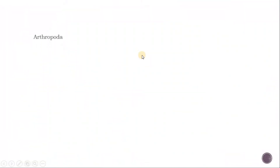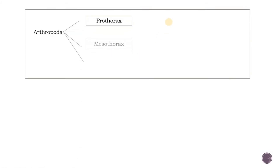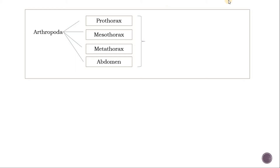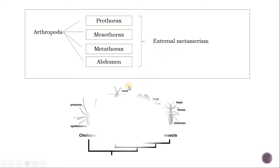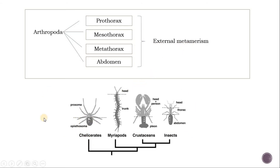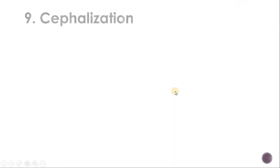In Arthropoda there is only external metamerism or external segmentation: prothorax, mesothorax, metathorax, and abdomen. In Chelicerata the prosoma body divides into two segments: prosoma and opisthosoma. Some have head and trunk; others have head, cephalon, and pallion; or head, thorax, and abdomen where head and thorax mix to make up prothorax and mesothorax. These are the metamerisms found in animals.